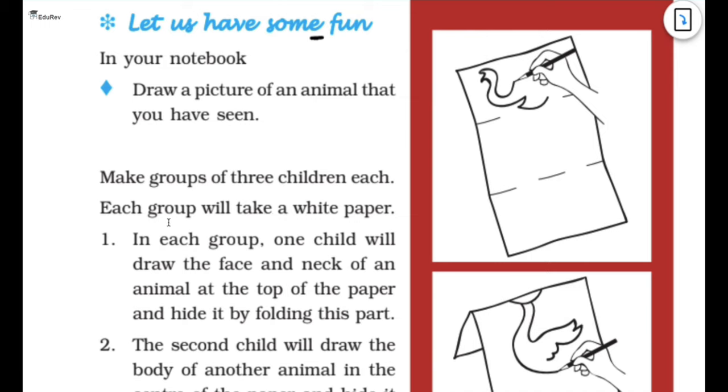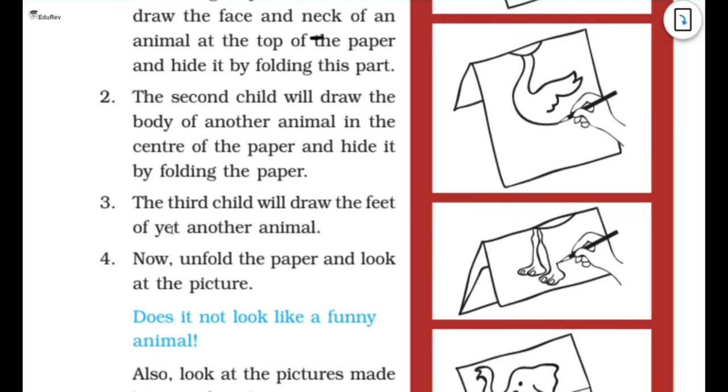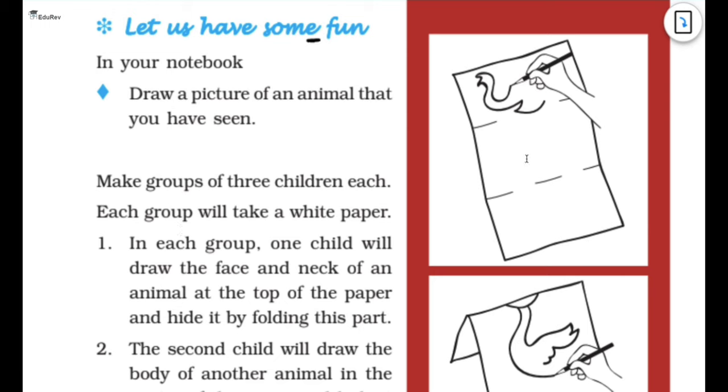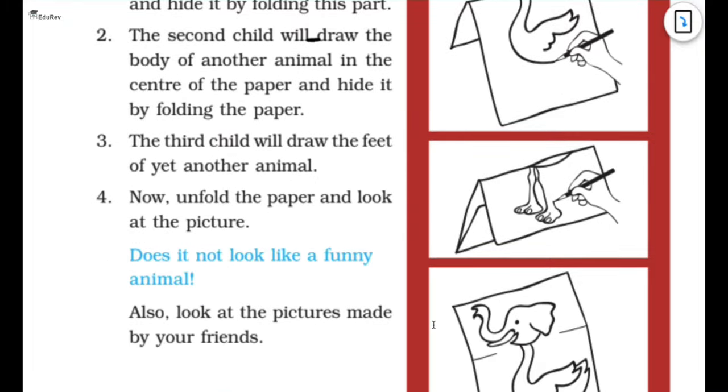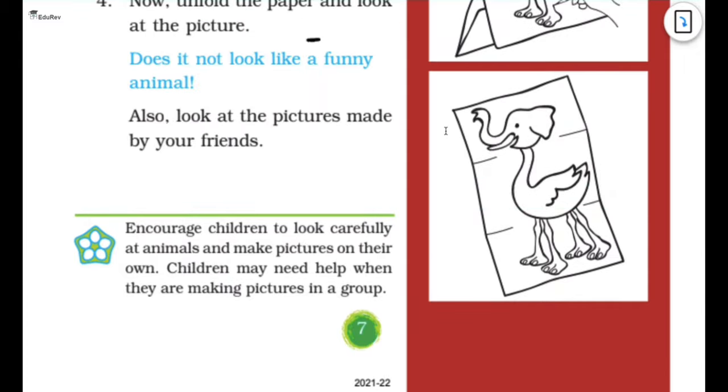In your notebook you have to draw pictures of animals as well. Make groups of three children each. Each group will take a white paper. In each group one child will draw the face and neck of the animal at the top of the paper and hide it by folding this part. Then the second child will draw the body of another animal in the center of the paper and hide it by folding the paper. And the third child will draw the feet of yet another animal. Now unfold the paper and look at the picture. Does it not look like a funny animal? This is the activity what you need to do.